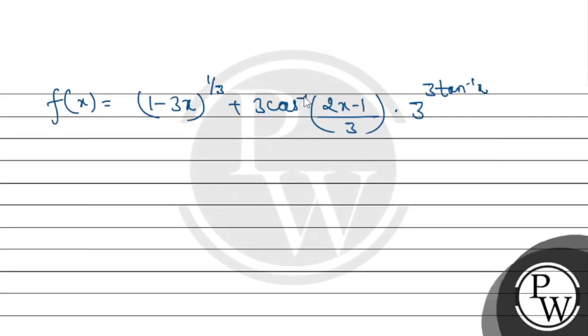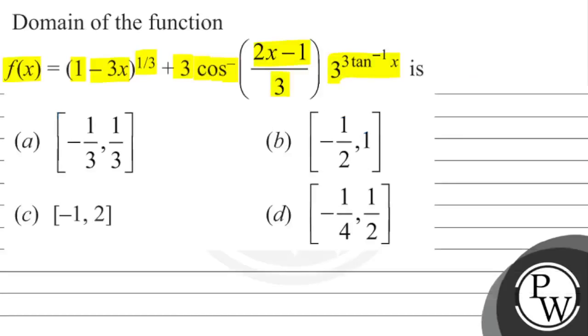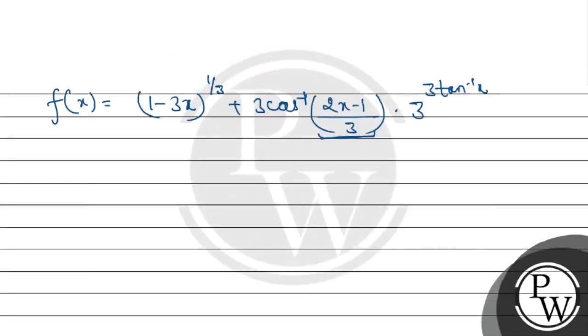The first thing we have to focus on is cos inverse. For the cos inverse term, the argument should be between -1 and 1. This is a real number, so here we can see how we can work here.